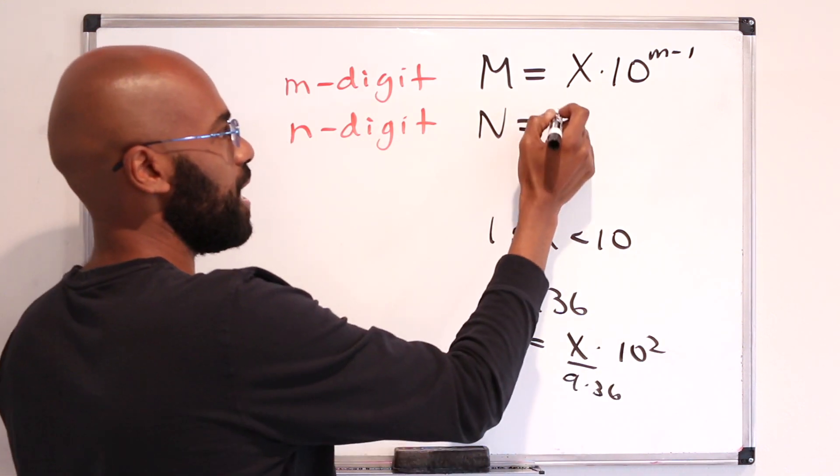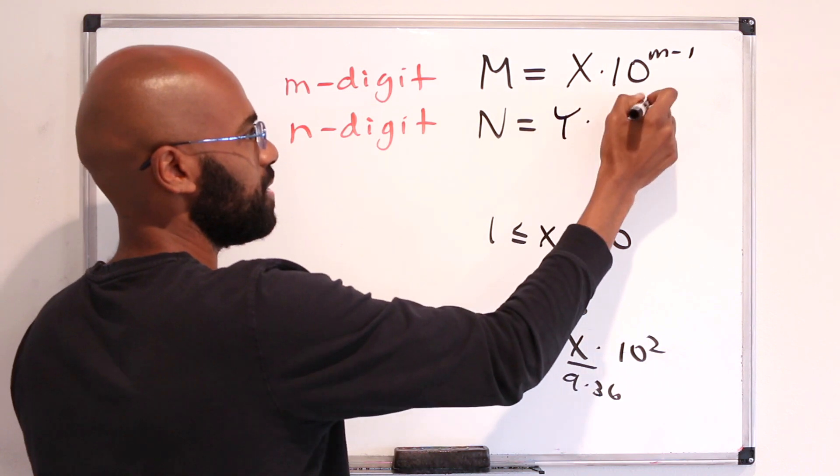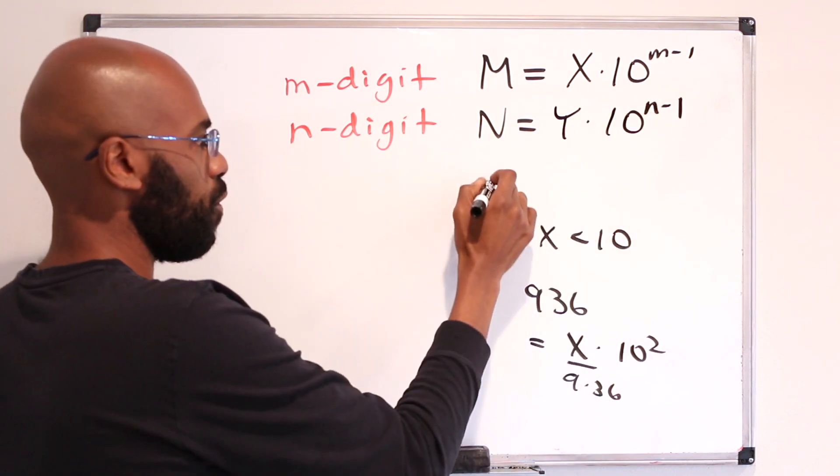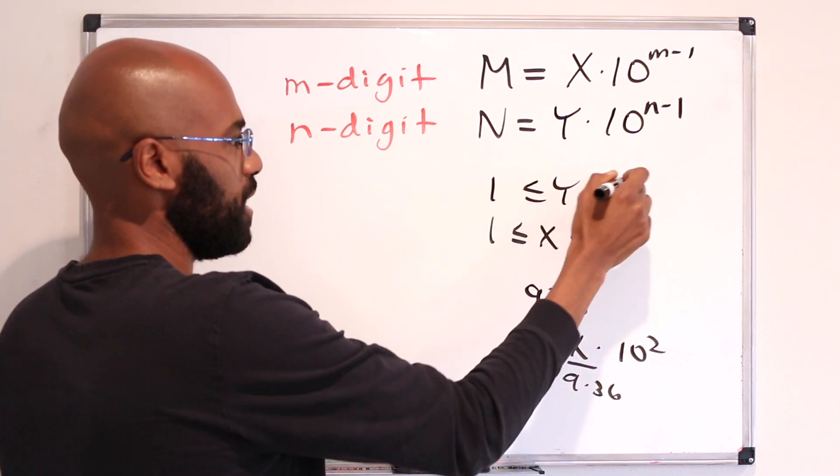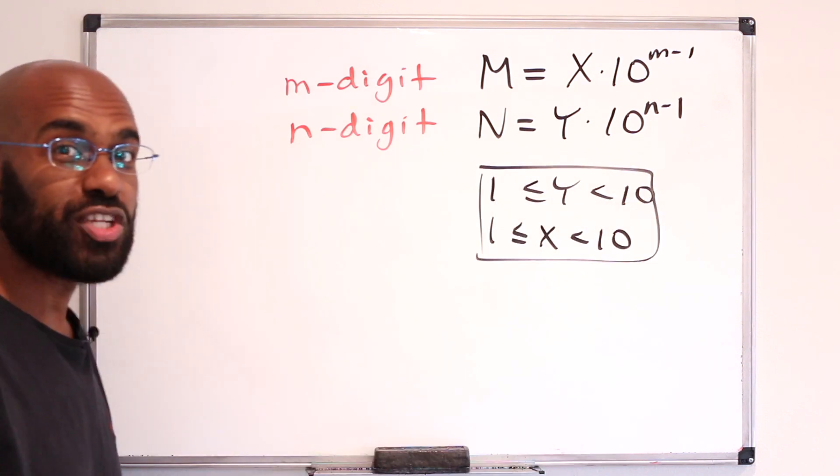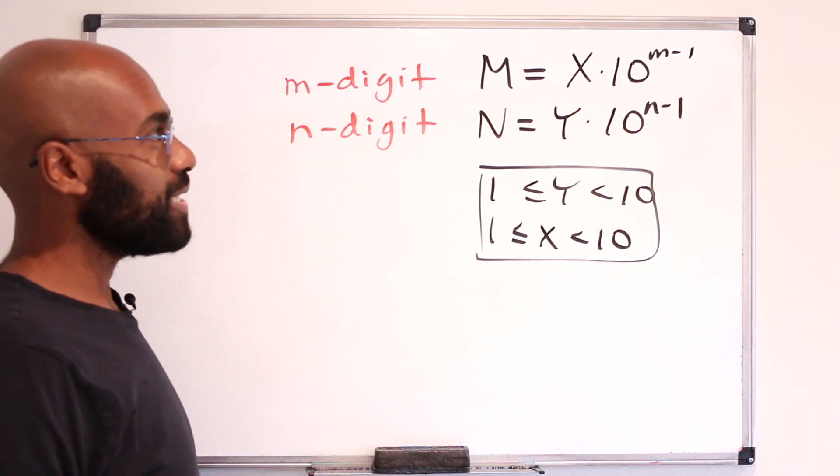Similarly, we can write capital N as y times 10 to the n minus 1, where y is between 1 and 10 as well.